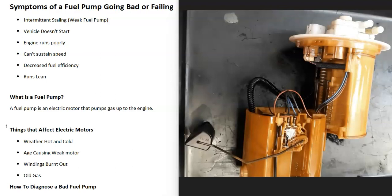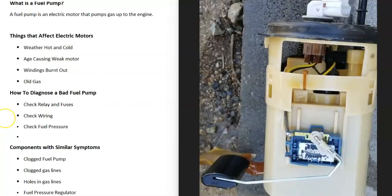The windings inside electric motors burn out so then it just won't work anymore. If the vehicle's been sitting for a very long time, like two, three, six months or something like that, then old gas can also affect fuel pumps. Old gas can affect the entire fuel system.